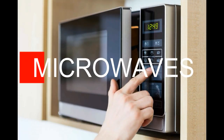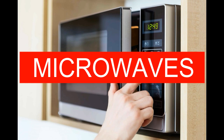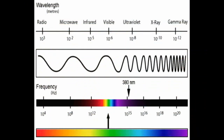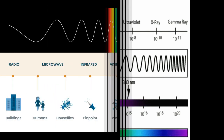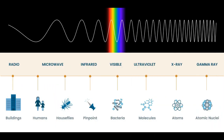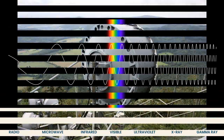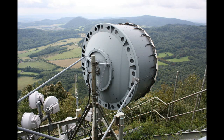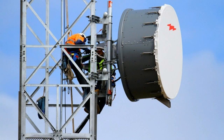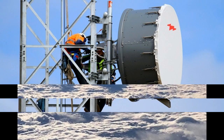Microwaves are the second lowest frequency waves in the EM spectrum. Whereas radio waves can be up to miles in length, microwaves measure from a few centimeters up to a foot. Due to their higher frequency, microwaves can penetrate obstacles that interfere with radio waves, such as clouds, smoke, and rain.